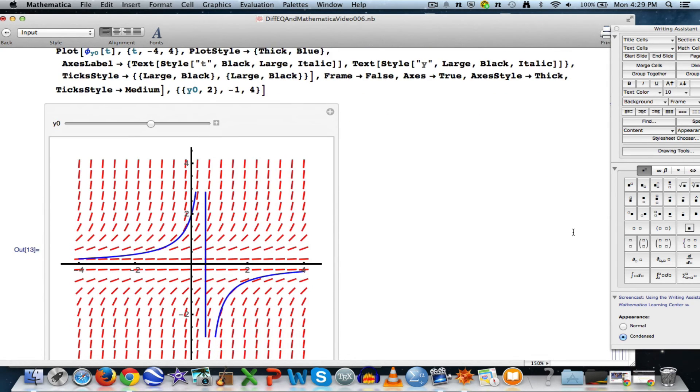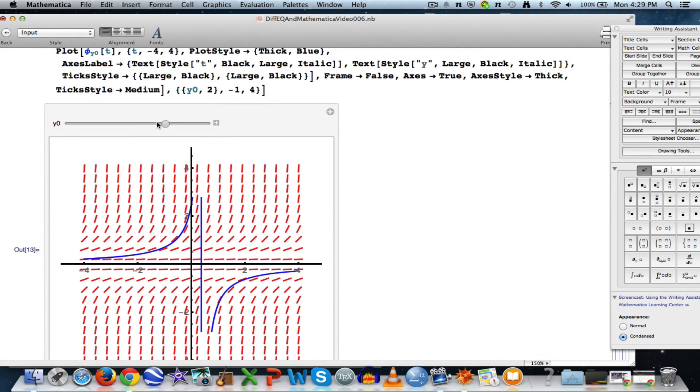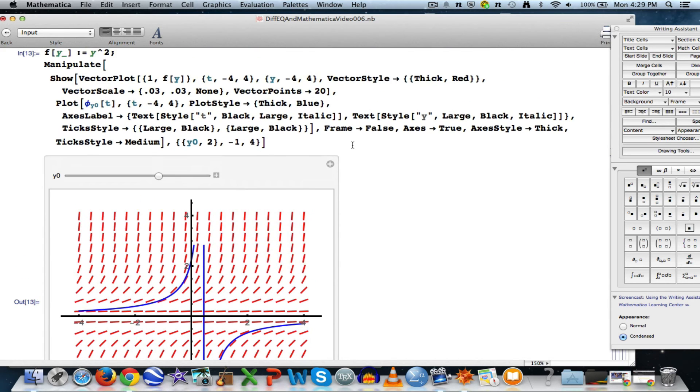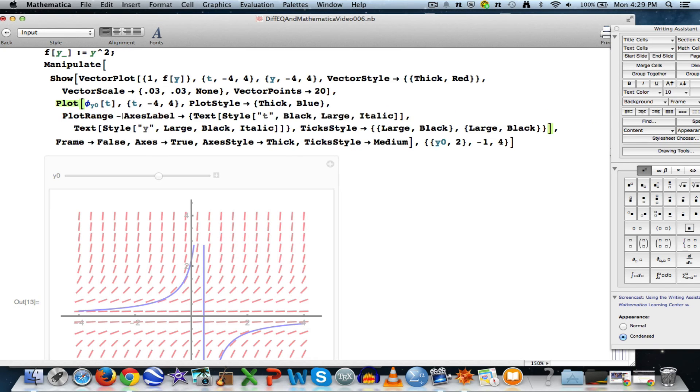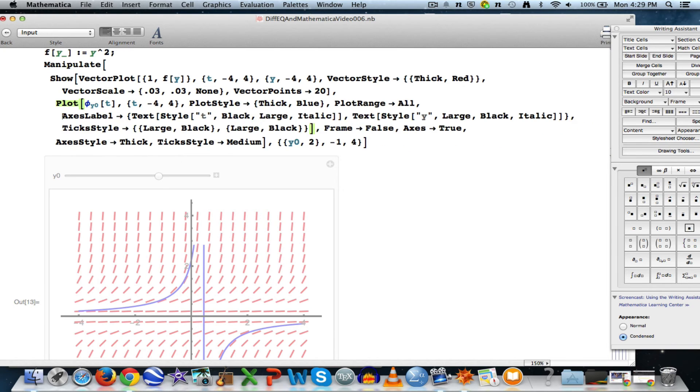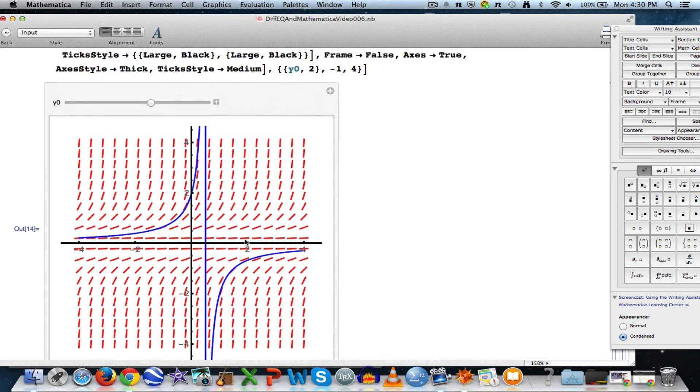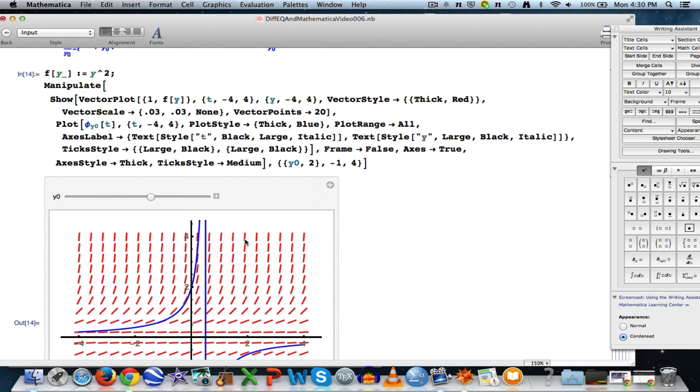It's not quite ideal in a couple ways. One is it doesn't go up very far, down very far. That's where the PlotRange All comes in when you see that kind of thing. If you add this option, PlotRange All, that should fix that. Yep, it goes up and down further. I don't know why it doesn't do that as a default.